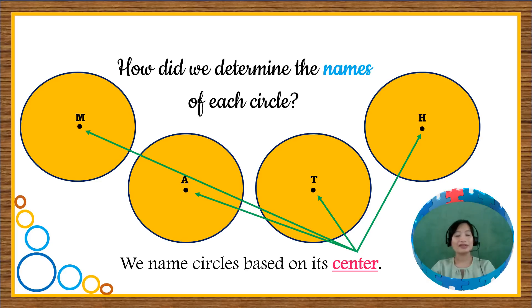So again, we have circle M, circle A, circle T, and circle H.